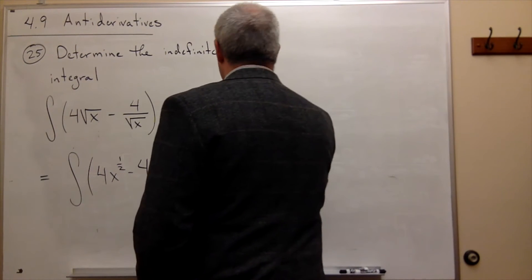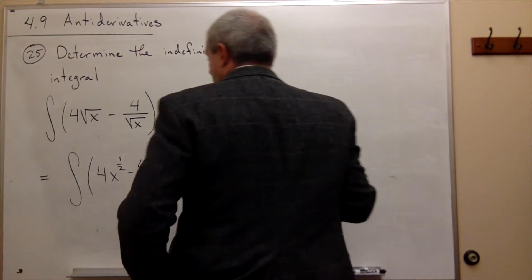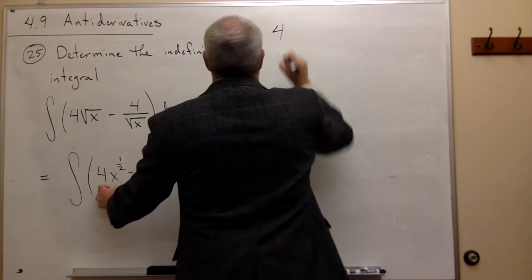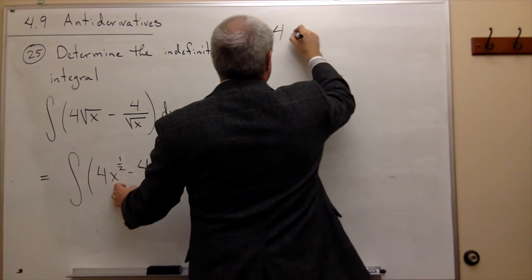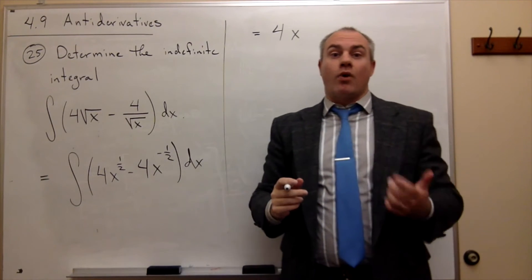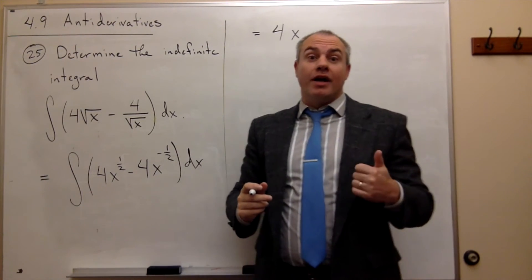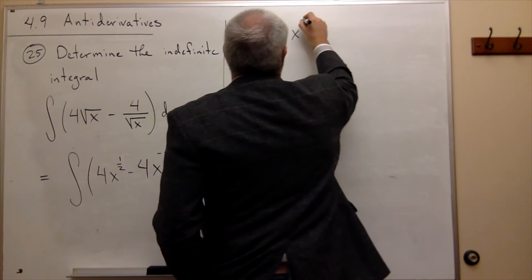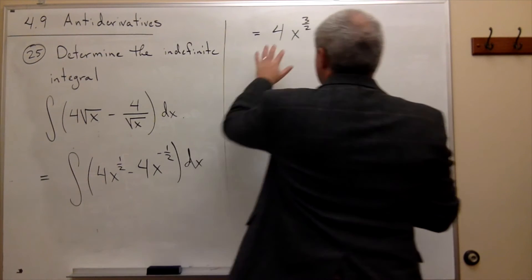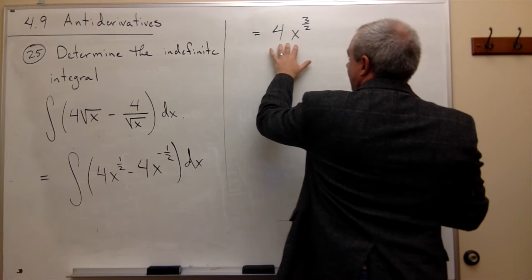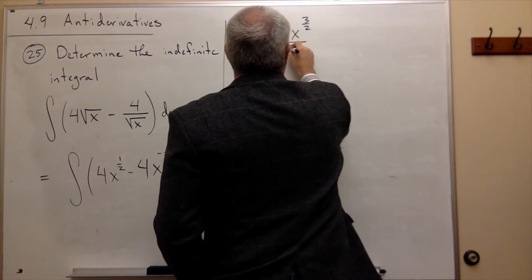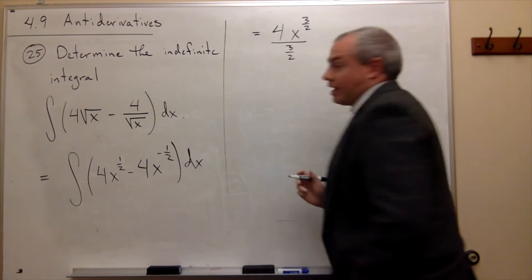So this integral is going to be equal to, well, the 4 is just a constant, so I'll just rewrite it. And then I have x, and I raise the power by 1. Right now that power is a 1 half. When I add 1 to 1 half, I get 3 halves. And then I need to divide this thing by the new power, which is 3 halves, so I divide by 3 halves.